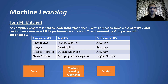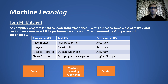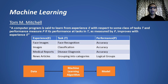You can look at another problem — image classification — where you want to do a simple classification between images of dogs and cats. Here the input or experience is a set of images of dogs and cats, the task is to classify an image as a dog or a cat, and the performance measure is accuracy. The more images of cats and dogs with a lot of varieties that the algorithm looks at, the better results you get.